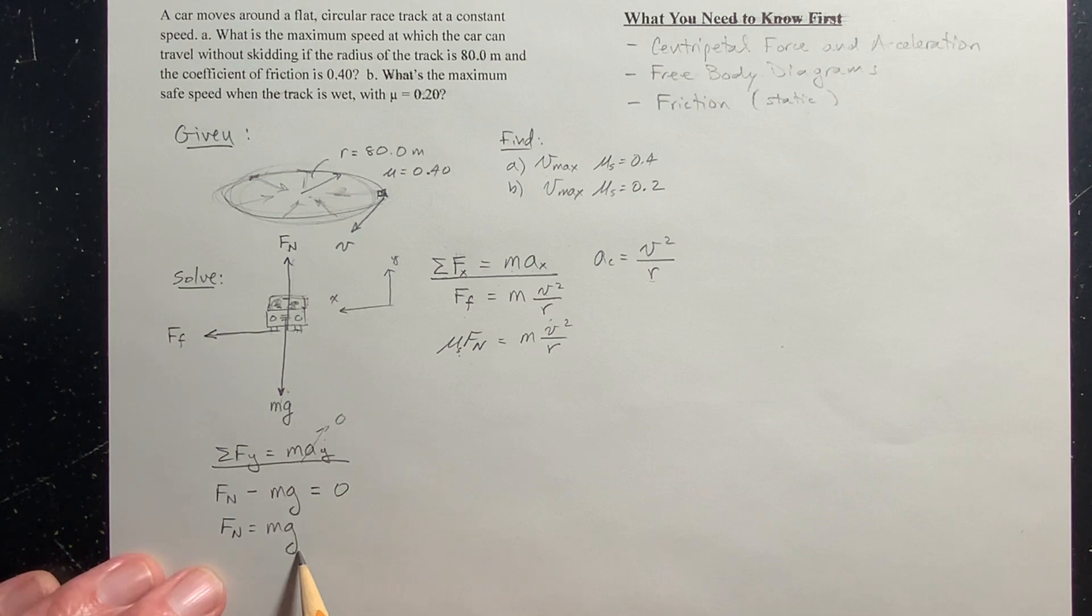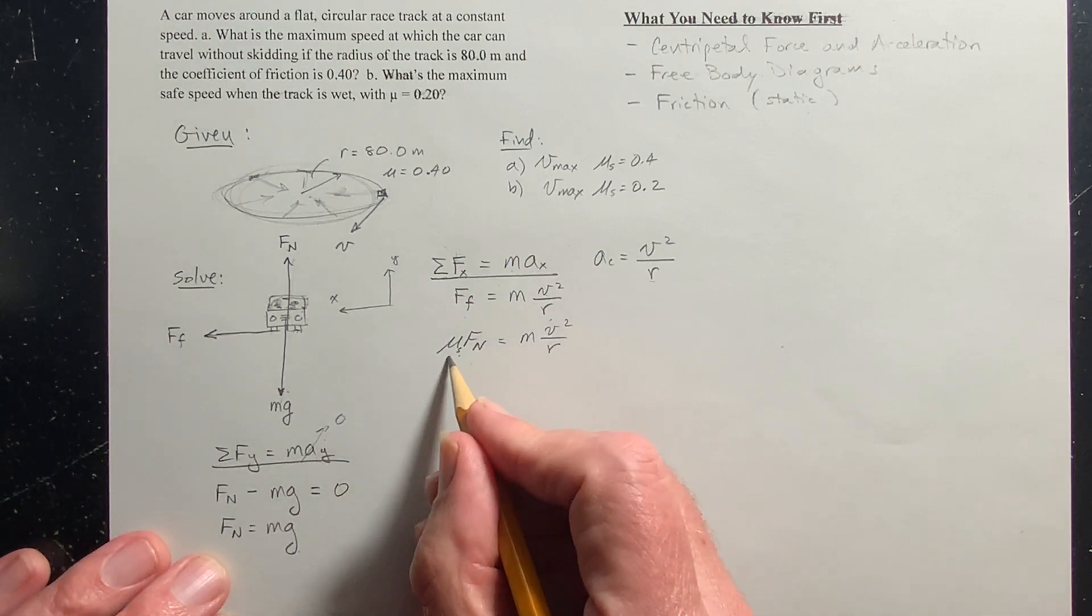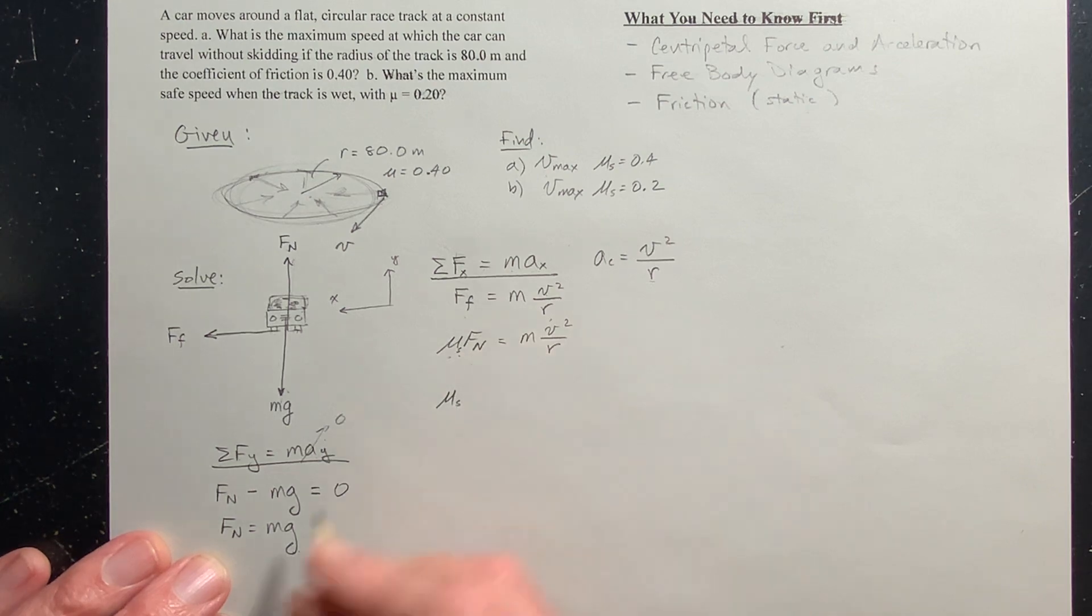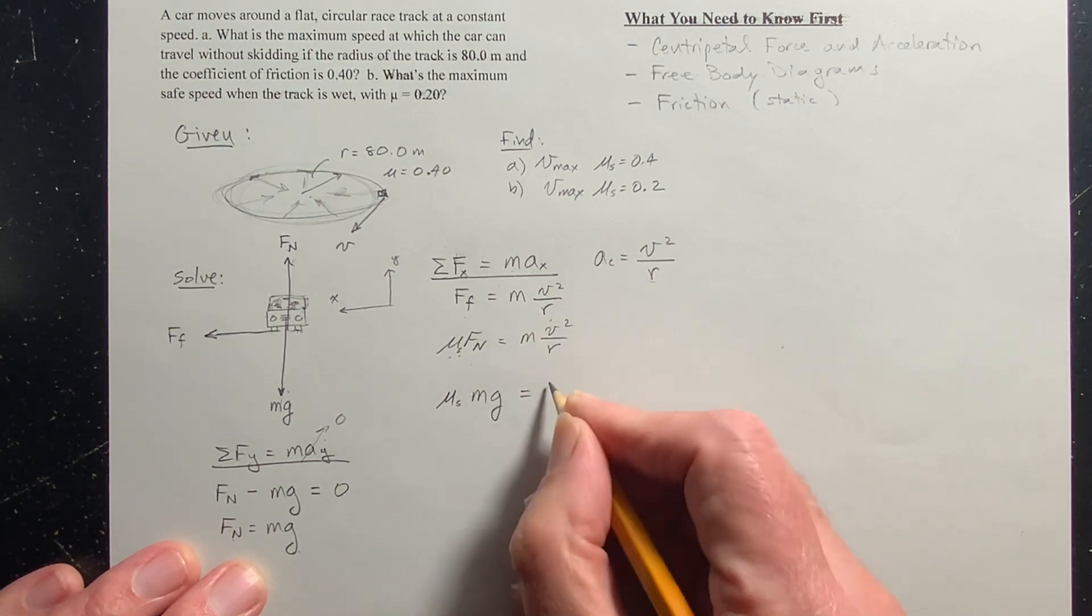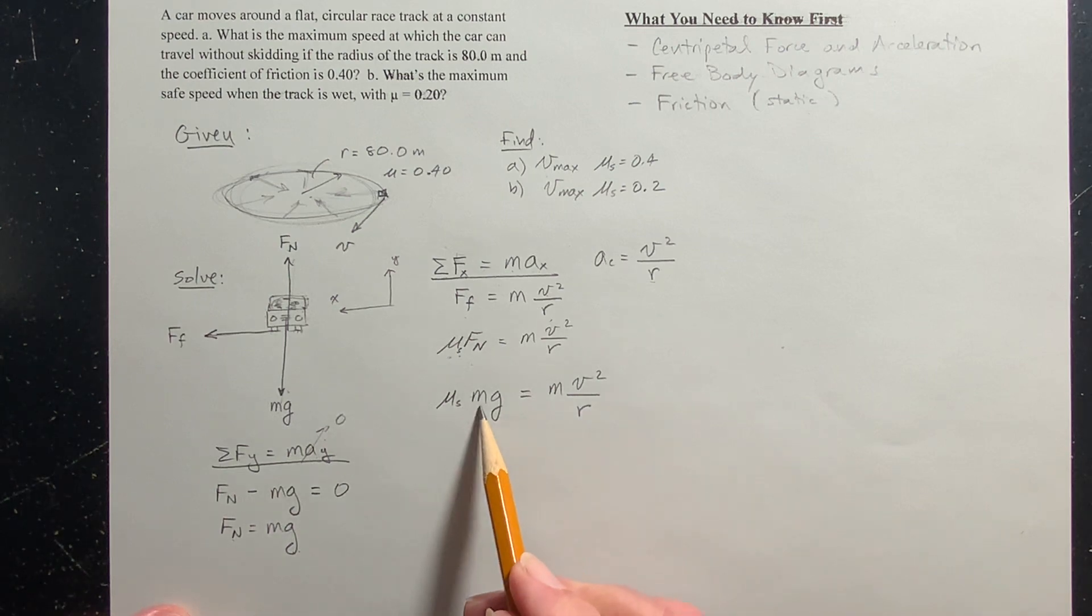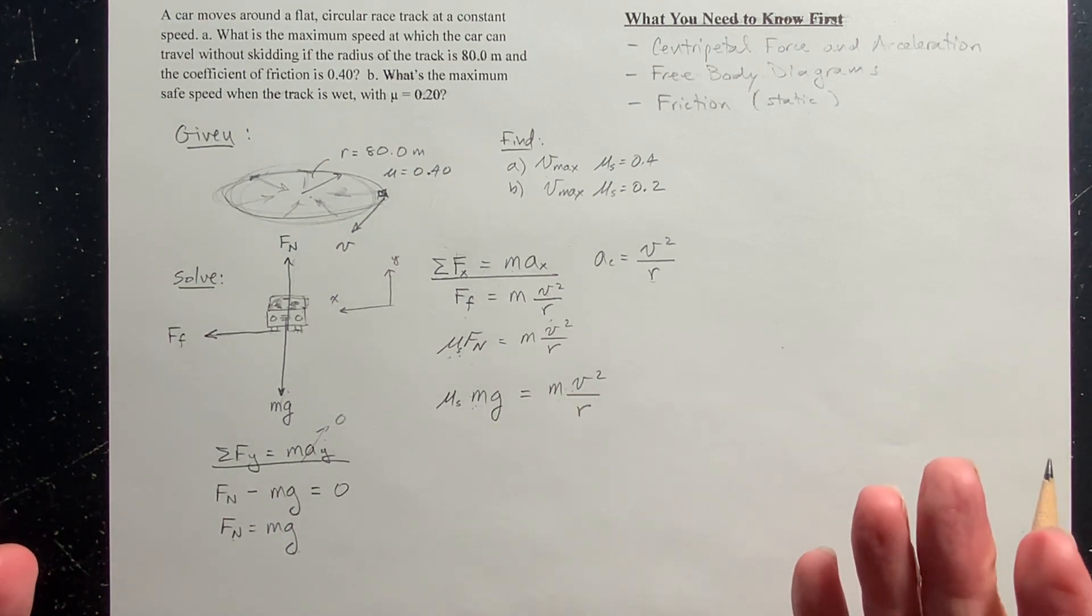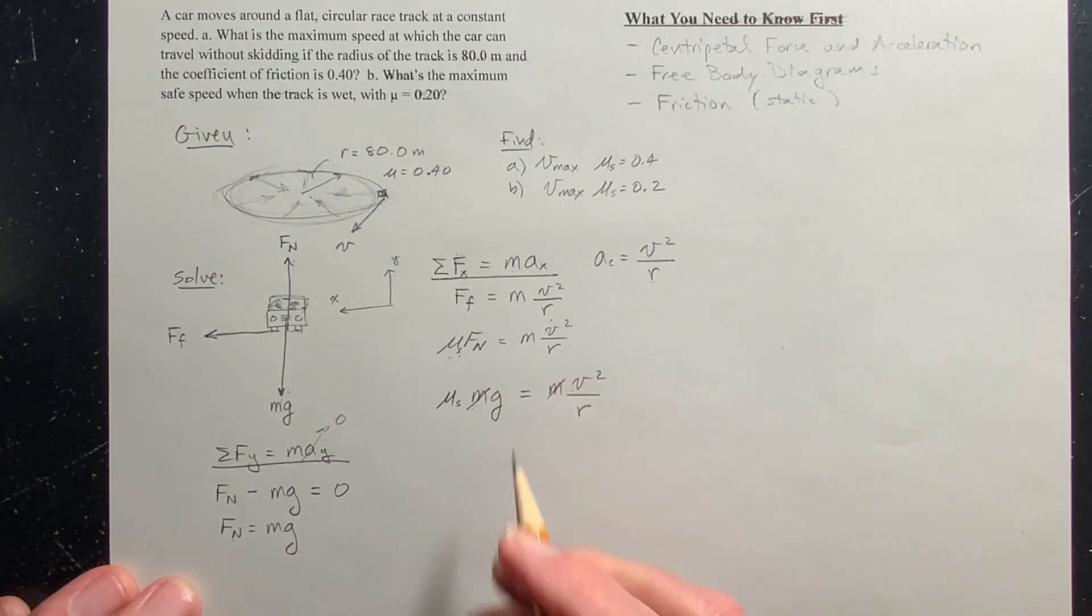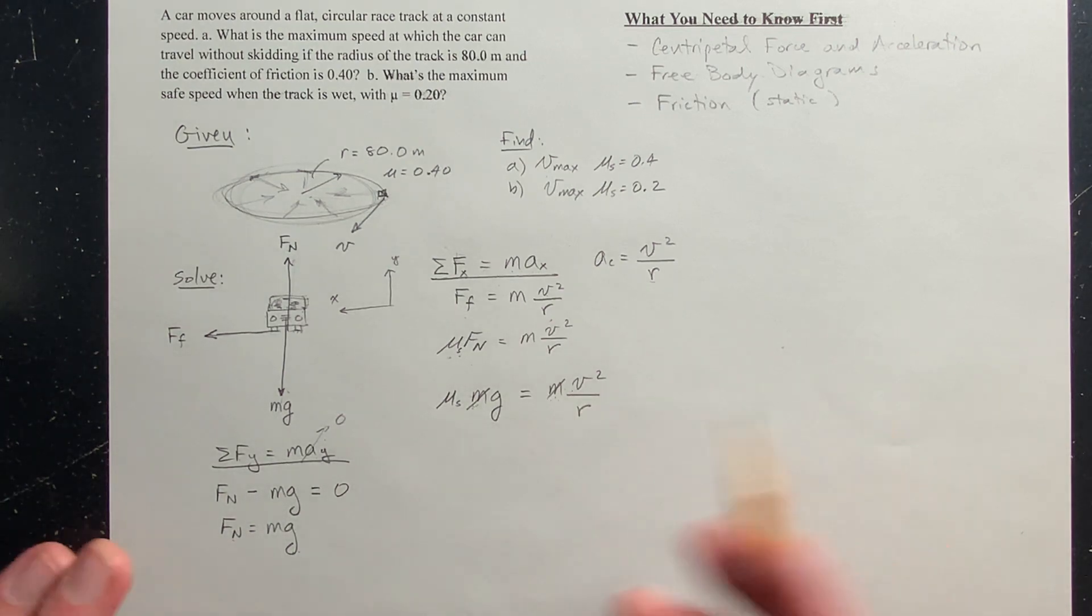I like to show it formally like this for my videos. So we got mu static times the normal force, but that's mg, equals m v squared over r. Now this is cool because look, there's mass here and here. They didn't give us the mass of the car. The mass cancels out. This is great because what this means is as long as you have tire rubber and asphalt, you don't need to have a different speed limit for like a little bitty car and a great big SUV or something, because the mass of the car doesn't really matter.